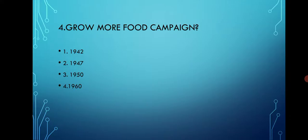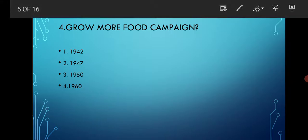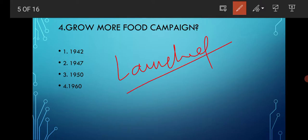When was the Grow More Food Campaign launched in India? Options are 1942, 1947, 1950, and 1960. The correct option is option number one, that is 1942.